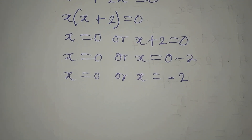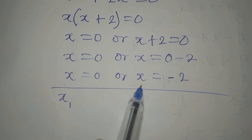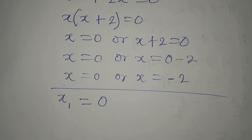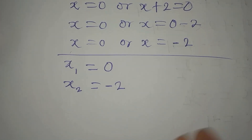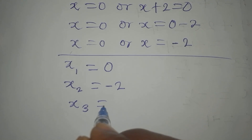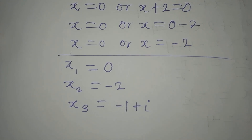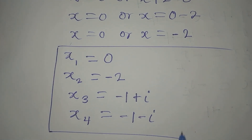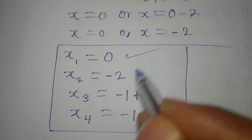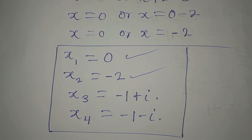Bringing all four solutions together: x₁ = 0, x₂ = -2, x₃ = -1 + i, and x₄ = -1 - i. x₁ and x₂ are the real solutions, while x₃ and x₄ are the complex solutions.